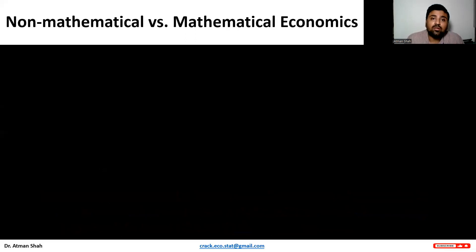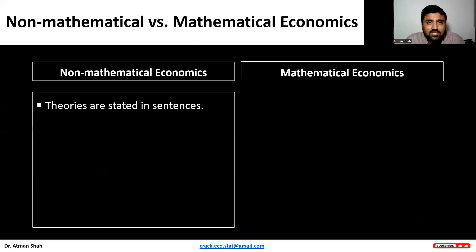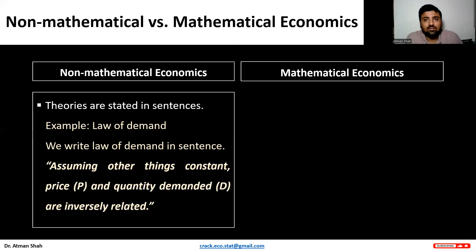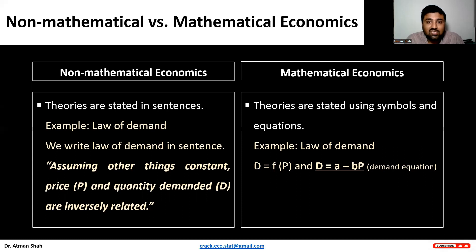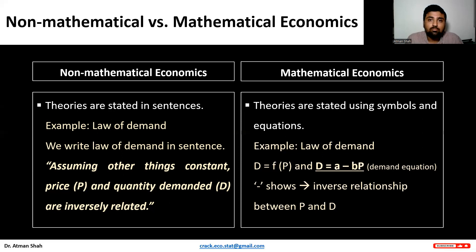Now let's understand the difference between non-mathematical economics and mathematical economics. In non-mathematical economics, we write theories in sentences. For example, the law of demand: if all other things are constant, we have an inverse relationship between price and quantity demanded. In mathematical economics, we use symbols and equations. The demand equation is D = A − B × P. This equation explains the demand theory, and the minus sign explains the inverse relationship between price and quantity demanded.